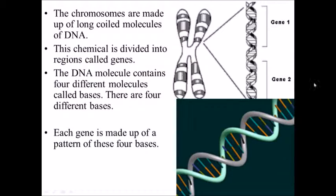On this section here, you have two genes that have been labelled. Now in reality, a gene is going to be much, much larger than this. On average, this seems to show that we have roughly between 12 to 15 nucleotide bases that make up a gene. In reality, a gene is usually made up of thousands of nucleotide bases.